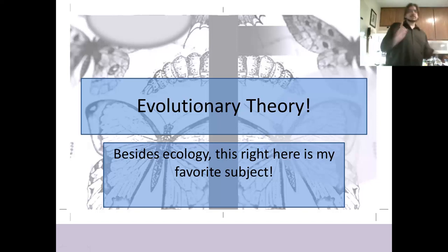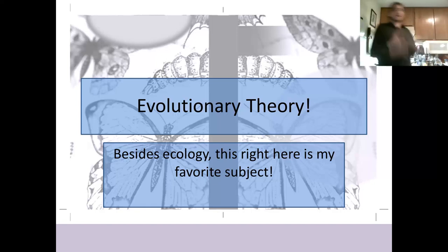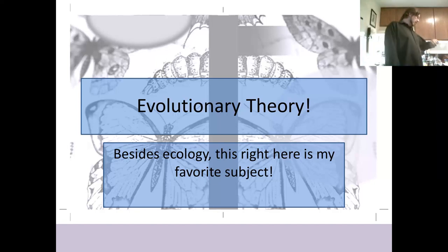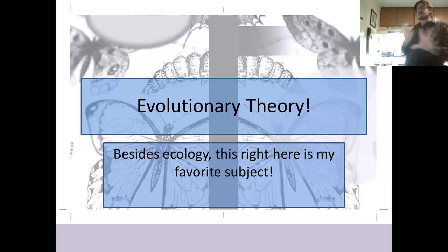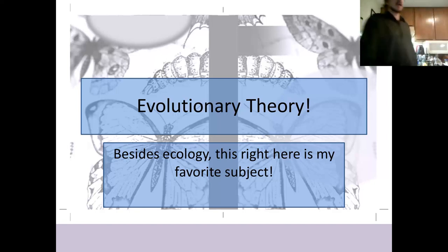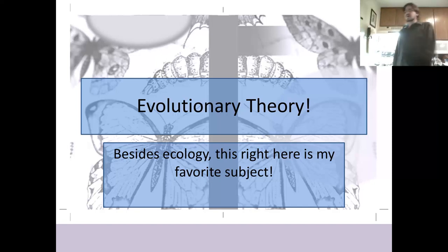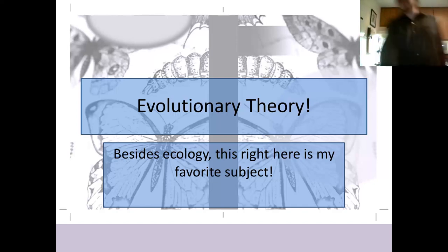Welcome to chapters 13 and 14, Evolutionary Theory. This is my favorite subject, aside from ecology. I also need to eat, so you're getting me in the kitchen. I'll be making pauses here and there to make dinner. You won't be tested over the recipes. Right now I'm making Indian clarified butter — ghee. It's a really easy recipe, so it shouldn't be too difficult to lecture and keep an eye on my butter.